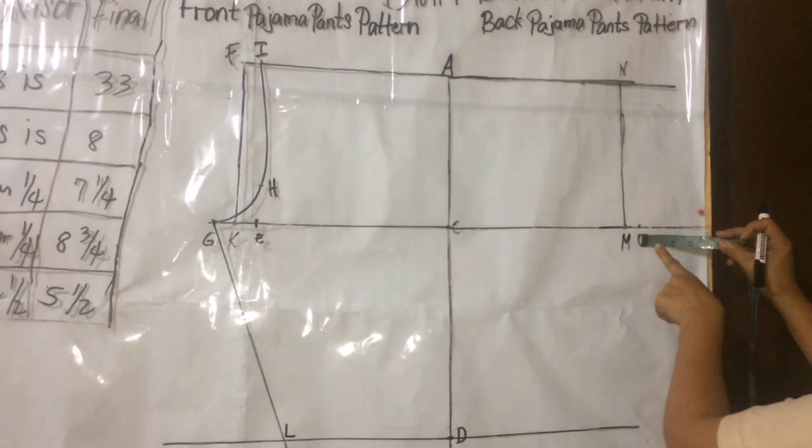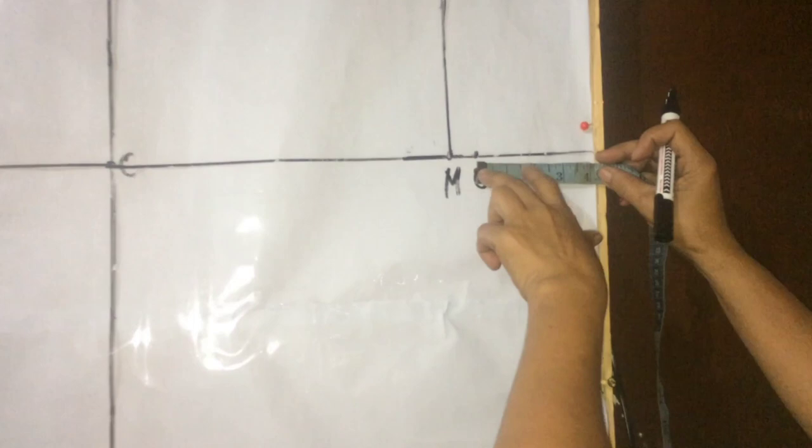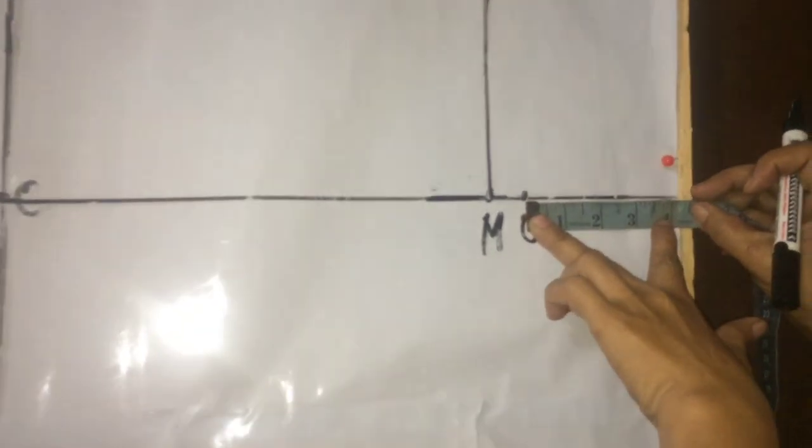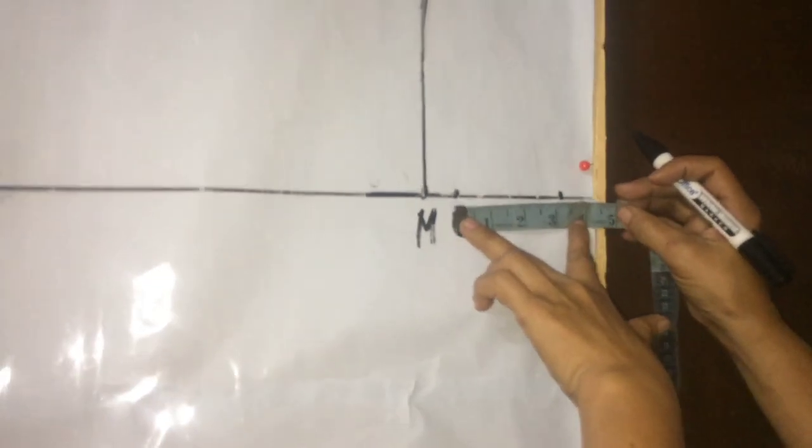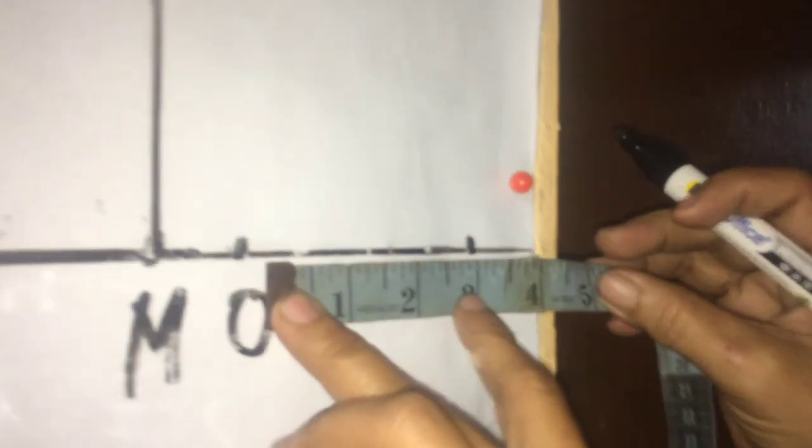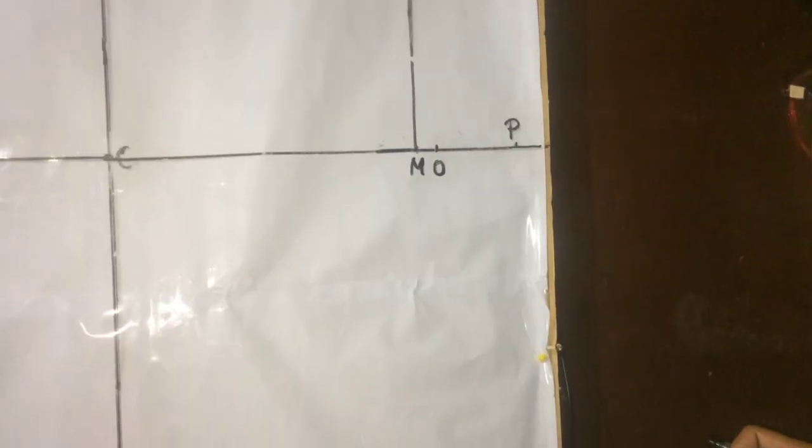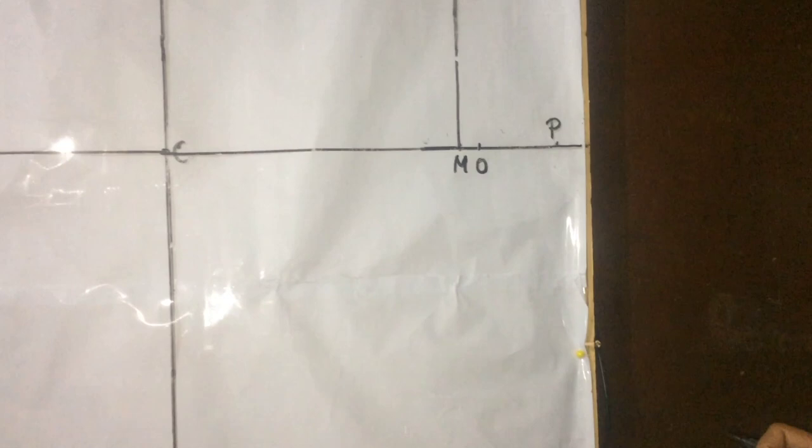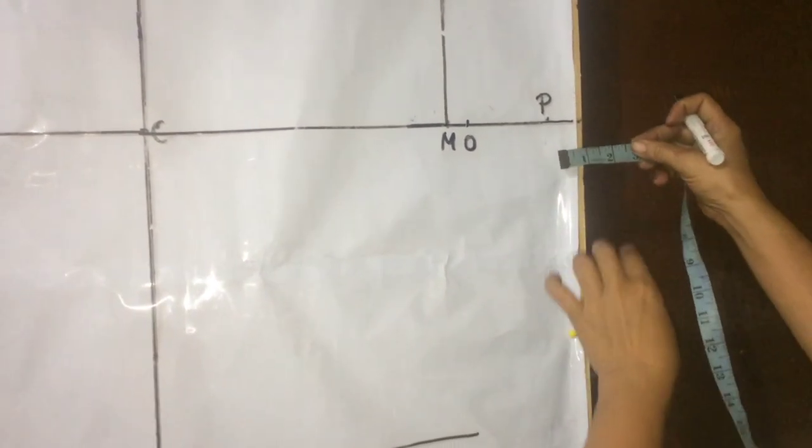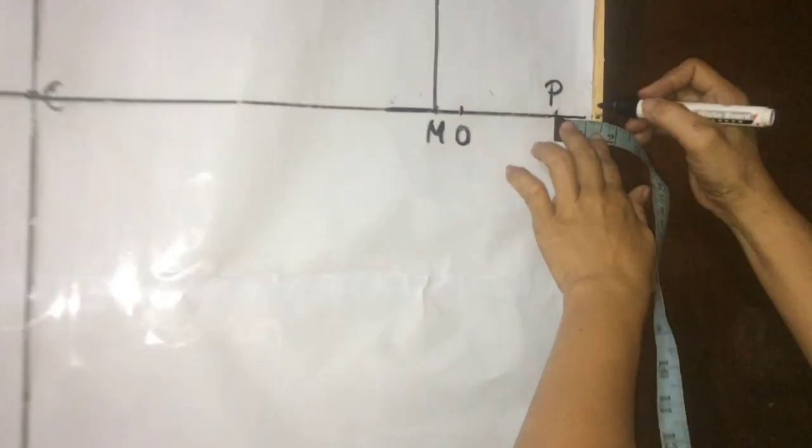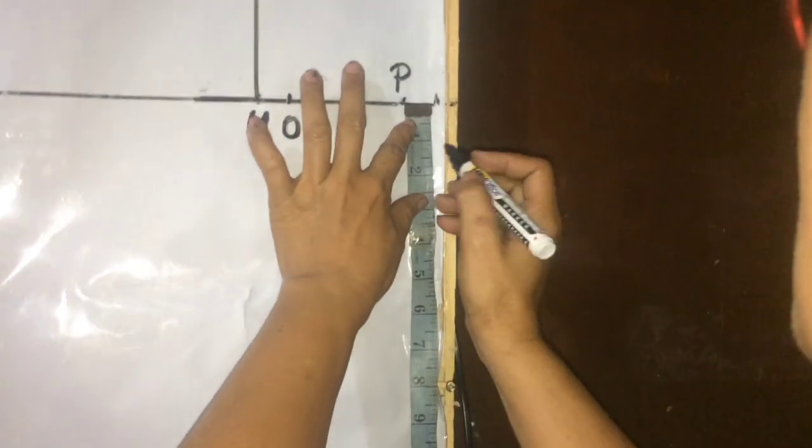From point O, measure three fourths and one fourth. Mark P. From point B, measure to the right, one inch. Then, measure one inch down.